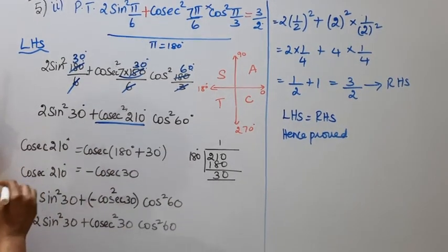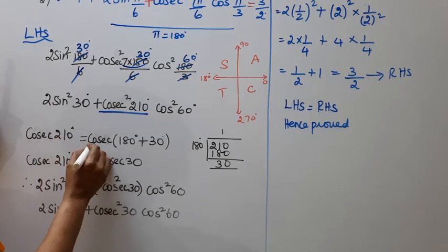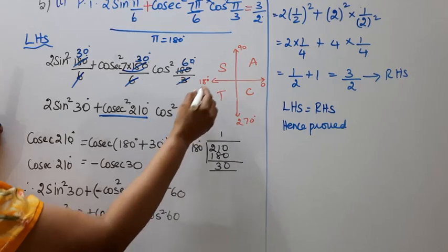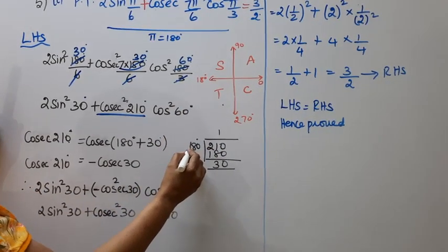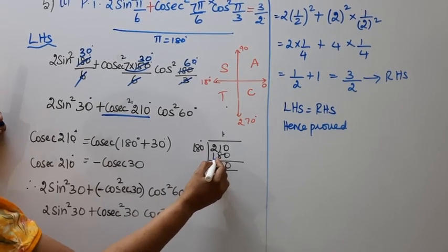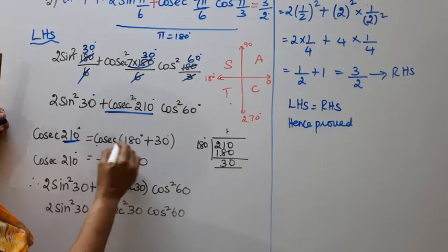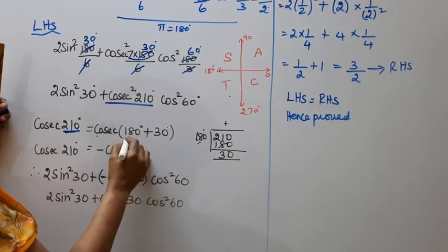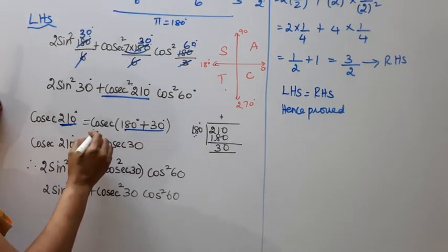6 into 30 is 180, so it's 30 degrees. Cosecant 210, cosecant 210. 210 can be written as 180 plus 30. So 210 equals 180 plus 30, which is 180 degrees plus 30 degrees.